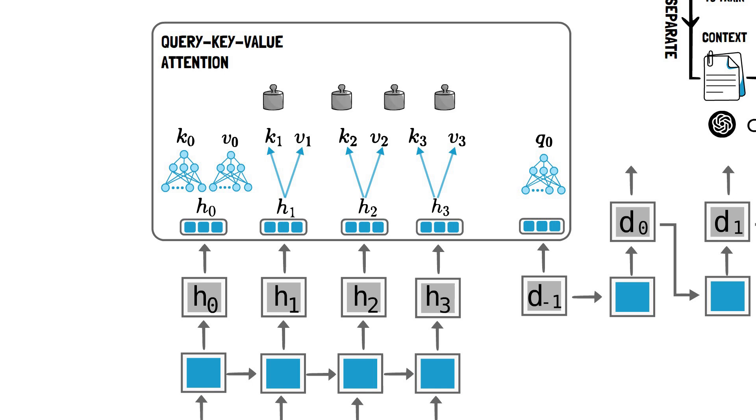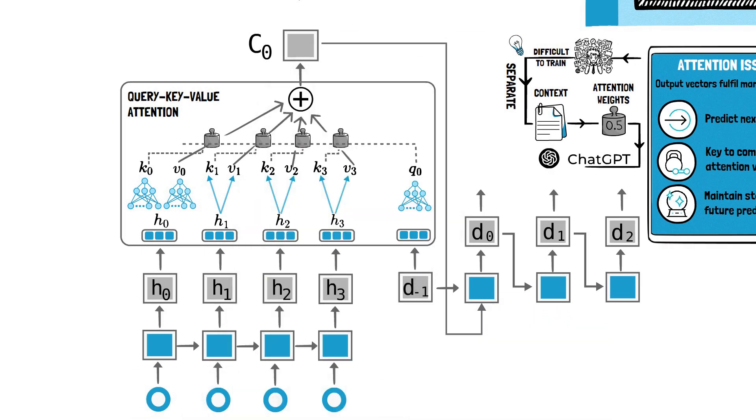Now, the attention weights are calculated from the decoder's query and the encoder's keys. The context is then calculated as a weighted sum of the value vectors based on these attention weights.